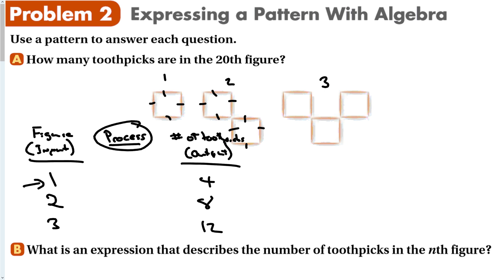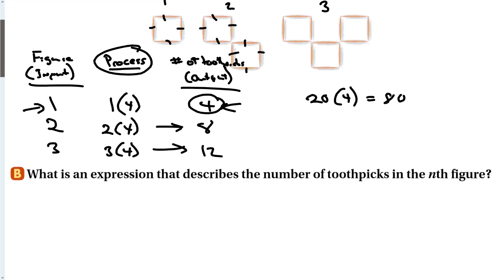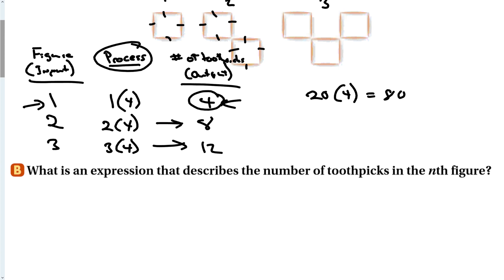So now I have to figure out the process. What am I doing to the input to get this output? So if I take the input and I do something to it, I should get this output. Well, so I take the input and I do something to it. Let's multiply by four. Let's multiply by four. Does that work? Yep. Let's multiply by four. Does that work? Yep. So to get the 20th figure, I would just take 20 and multiply by four to get 80 toothpicks. And again, it would have never been a good idea to draw a picture with 80 toothpicks in it.